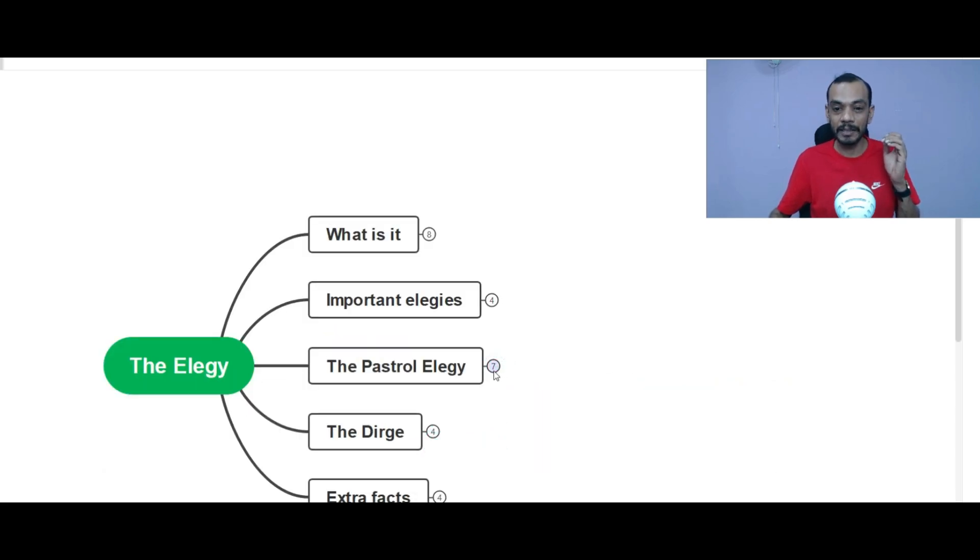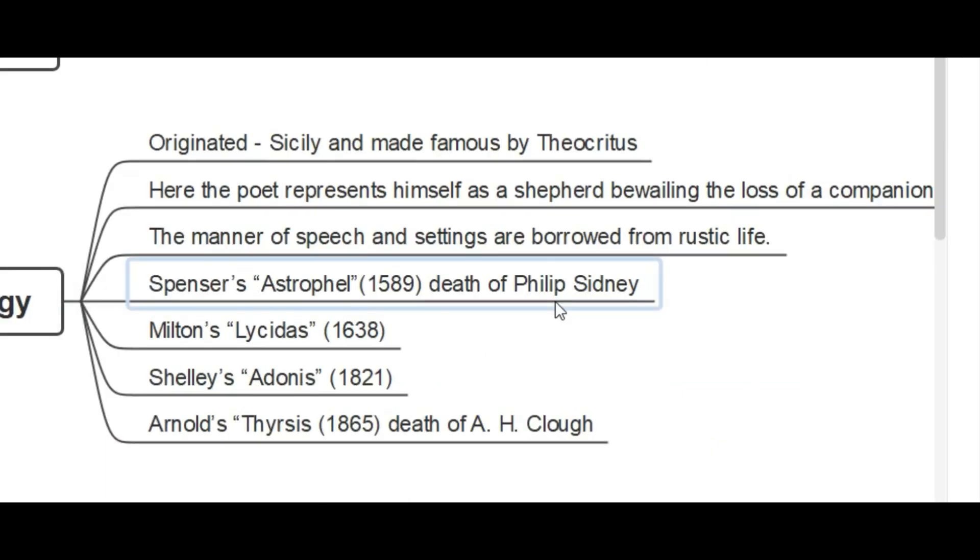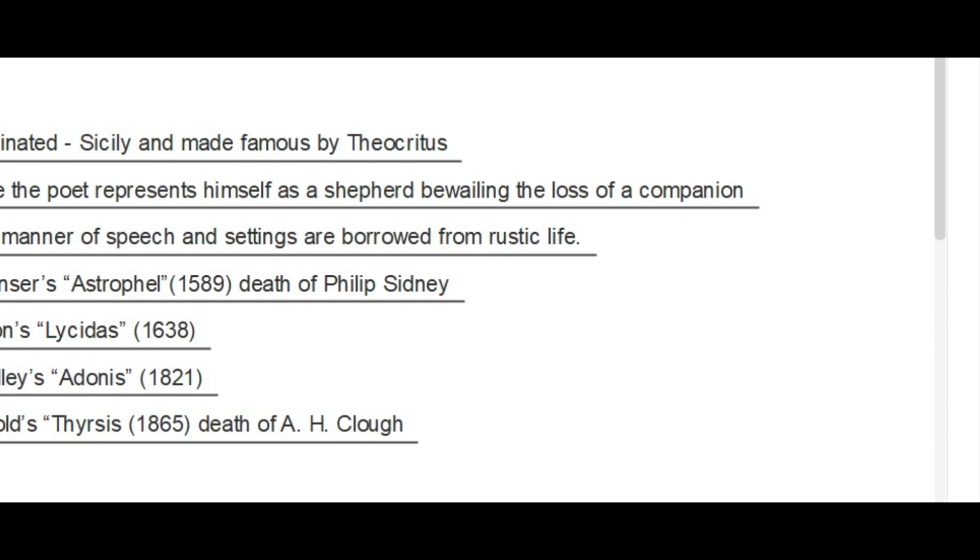And what is a pastoral elegy? That is the next thing. Actually, pastoral elegy is a kind of elegy which originated in Sicily and made famous by Theocritus. Here, the poet represents himself as a shepherd. And here he is bewailing the loss of a companion. And the setting is very important in pastoral elegy. It is of the rustic life.